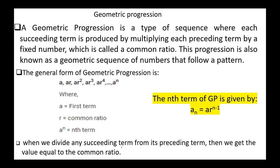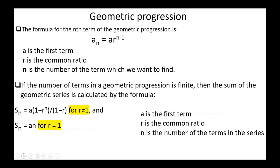When we divide any succeeding term by its preceding term, we get the value equal to the common ratio. If the number of terms in a geometric progression is finite, the sum is calculated by S_n = a·(1 − r^n)/(1 − r), when r ≠ 1. If r = 1, then S_n = a·n. Here, a is the first term, r is the common ratio, and n is the number of terms in the series.